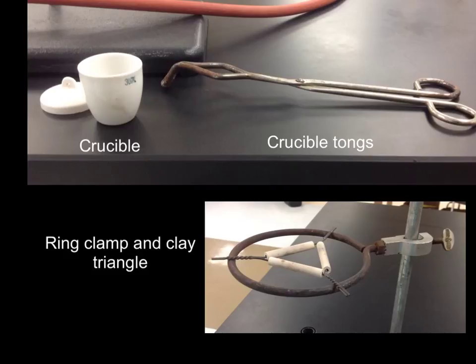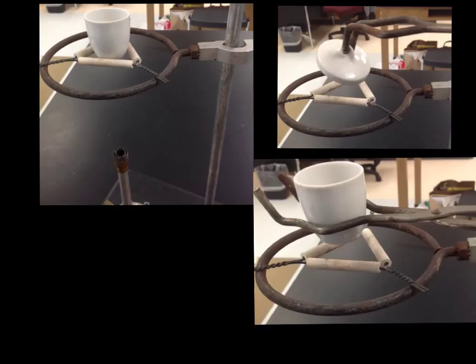One other use for a ring stand is to use something called a crucible, and the crucible is the small little porcelain container you see. It is used specifically for heating up solids, and there are a specific set of tongs that are used with the crucible, called crucible tongs, and then you also need a ring clamp attached to your ring stand and a clay triangle. So to set up the crucible, you want to put it in the clay triangle, which is sitting on the ring stand, and you could suspend it above a Bunsen burner because you're going to be heating what's in the crucible.